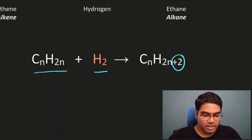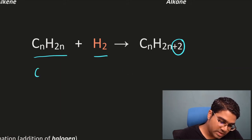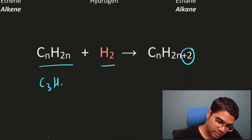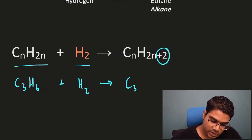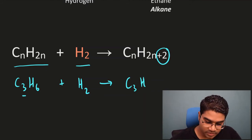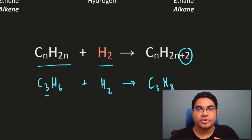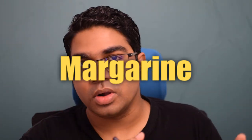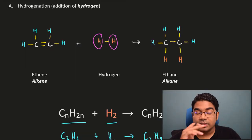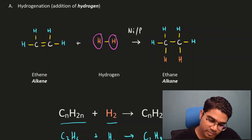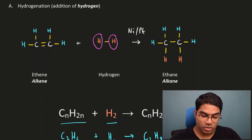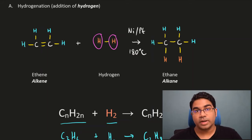This works for any alkene. Hydrogenation is actually a very useful process — it is used in the production of margarine from vegetable oils. However, this reaction does not occur spontaneously; it requires specific conditions. The catalyst for this reaction is either nickel or platinum, and it also requires a high temperature of 180 degrees Celsius. These are the conditions required for this reaction to take place.